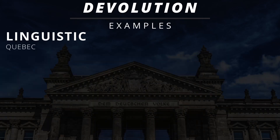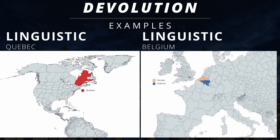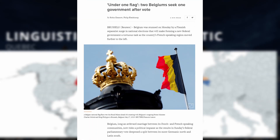Two cases of linguistic devolution that you want to keep in mind are Quebec and Belgium. In the past, there have been talks of devolutionary movements in Quebec as the primary language there is French, whereas the rest of Canada has English as their primary language. In Belgium, the country is divided into two major groups, Flanders and Wallonia. The Flemish up north speak Dutch, whereas the Walloons in the south speak French, and because of their linguistic differences, there have been conversations in the international media about possibly moving central power to the regional governments.